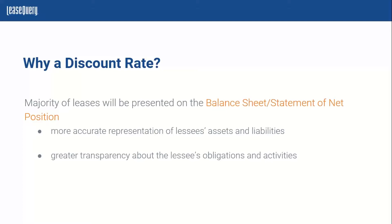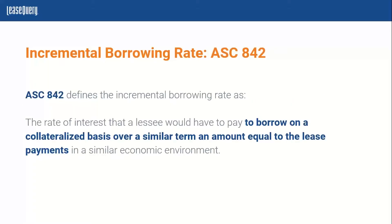From an ASC 842 standpoint, you have both operating and finance leases that will require a discount rate. The first thing we want to talk about in terms of breaking down the different options of rates you have is the incremental borrowing rate.